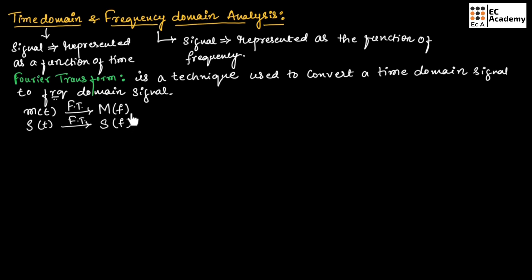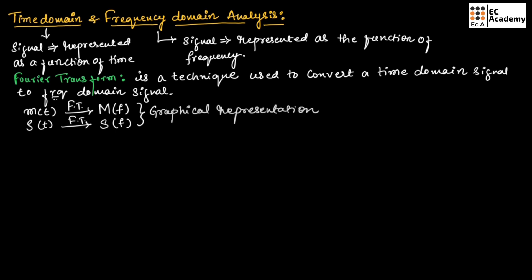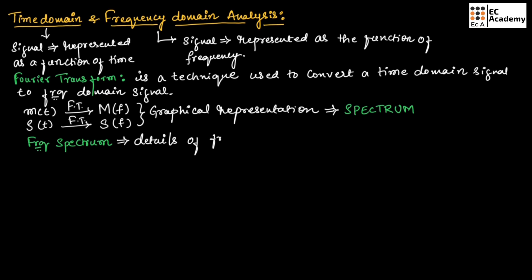If we represent the signals M of F and S of F graphically, the process is known as spectrum. So the graphical representation of a frequency domain signal is known as spectrum. The frequency spectrum gives details of frequency components in a signal.